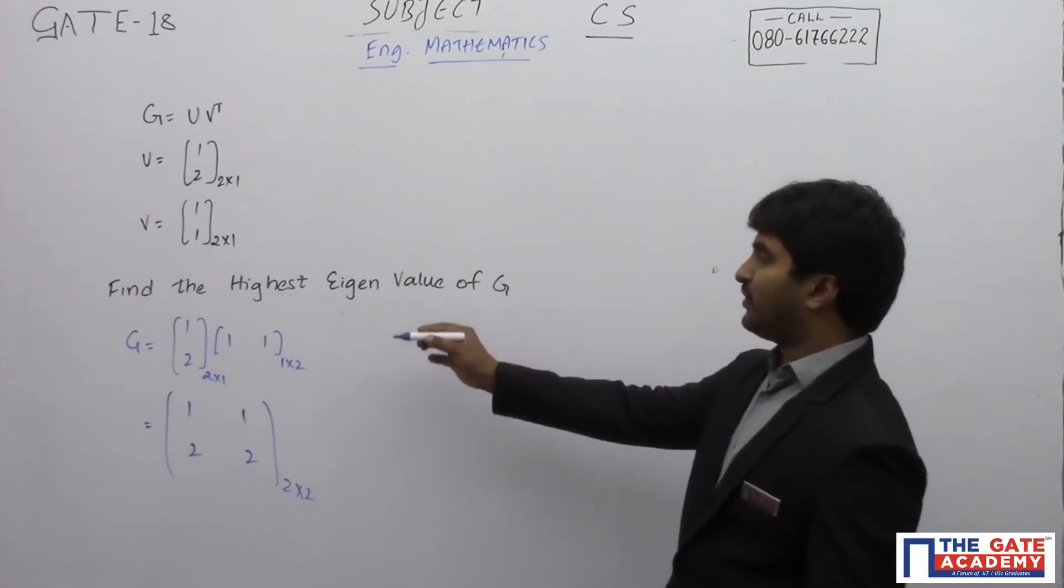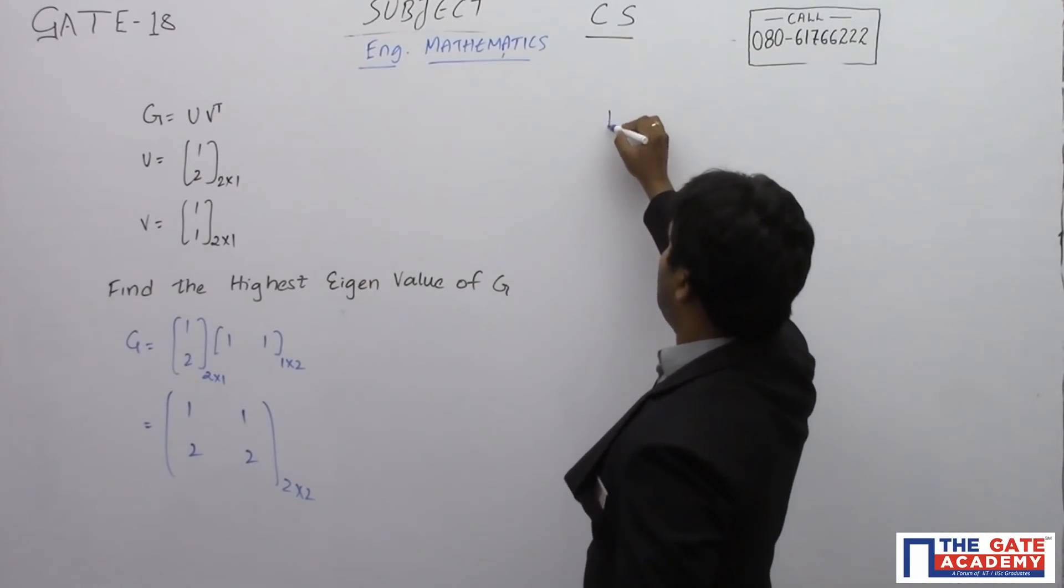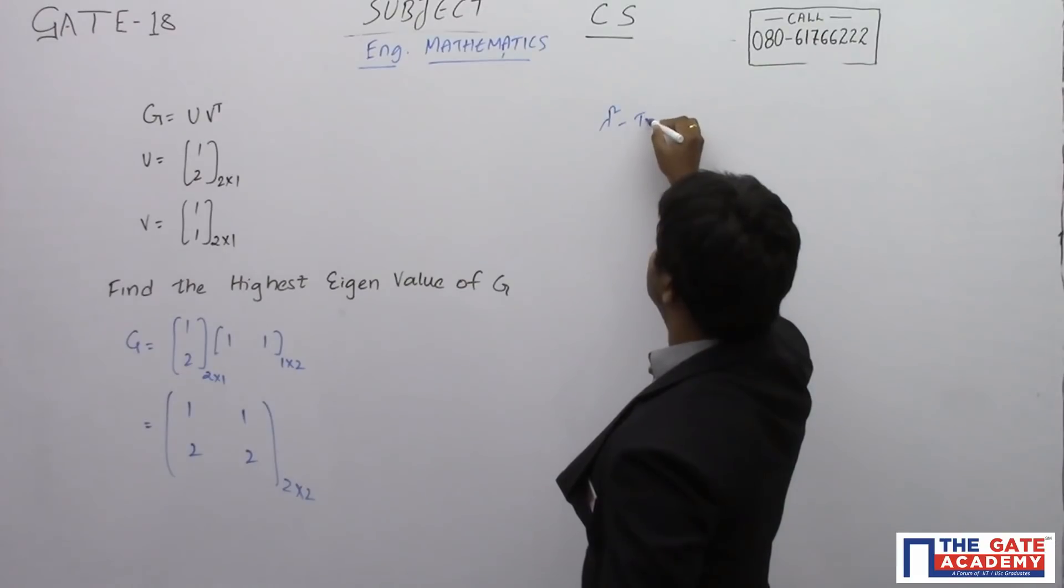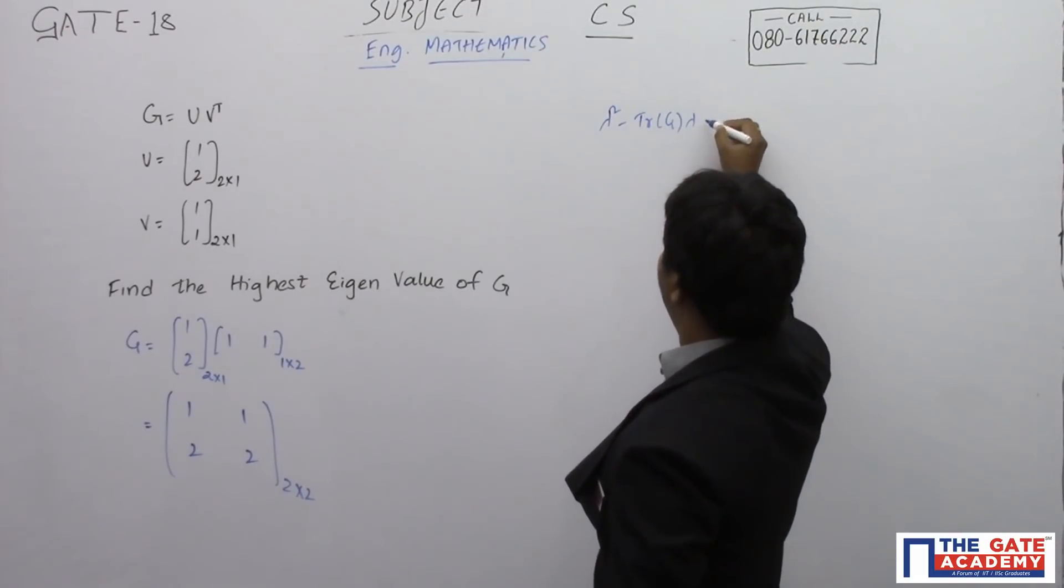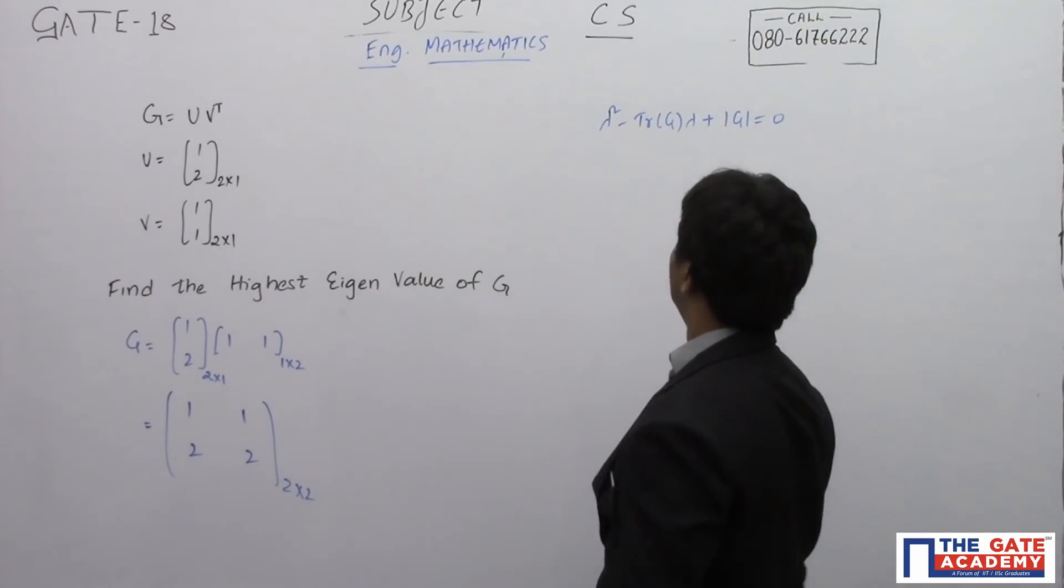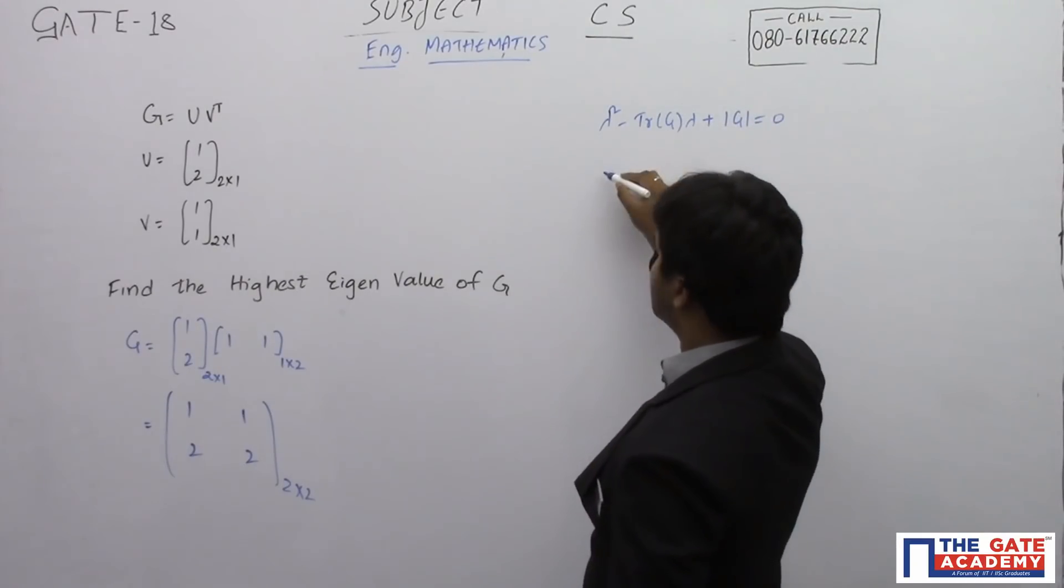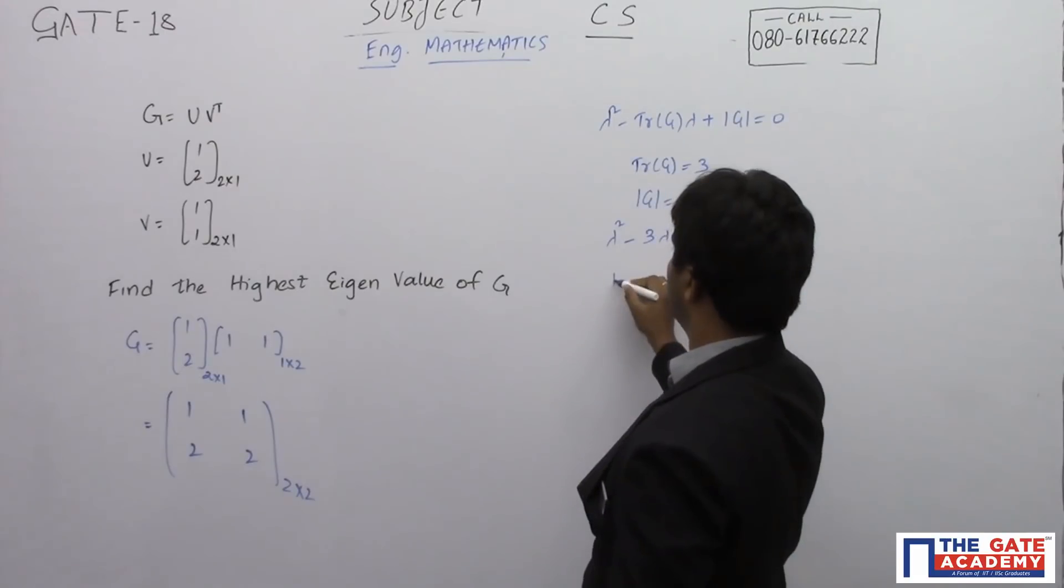So if you want to find the characteristic equation: lambda squared minus trace of G into lambda plus determinant of G is equal to 0. So here the trace of the matrix is equal to 3 and determinant is equal to 0.